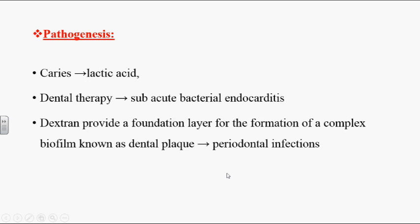Pathogenesis: dental caries occurs on tooth structures because of lactic acid produced by these bacteria. These bacteria utilize carbohydrates for their metabolism and produce lactic acid as a byproduct. This lactic acid destroys tooth structures — enamel, dentin, and pulp — ultimately leading to caries and dental problems.